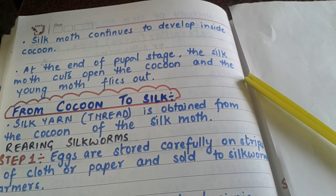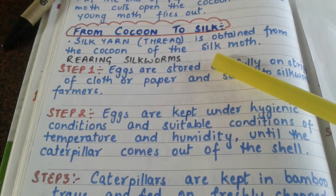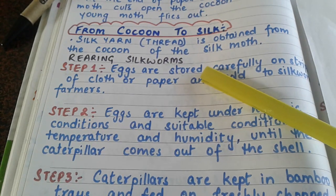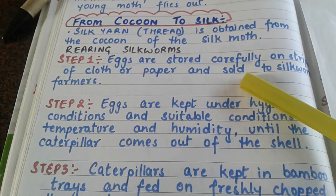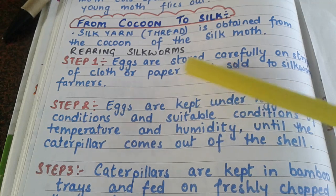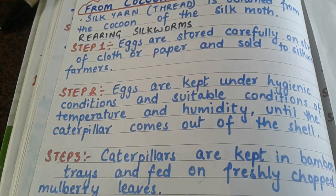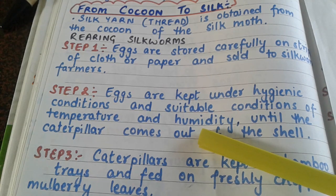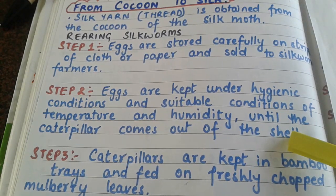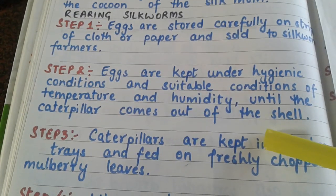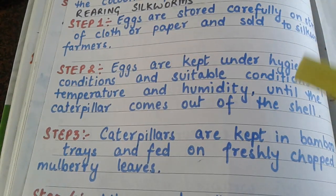Now let us understand how to obtain silk from the cocoon. There are two processes: rearing of silkworms and processing of silk. In step one of rearing, the eggs are stored carefully on strips of cloth or paper and sold to silkworm farmers. In step two, farmers keep these eggs under suitable hygienic conditions of temperature and humidity until the caterpillars hatch. In step three, the caterpillars are kept in bamboo trays with freshly chopped mulberry leaves to feed on and grow.